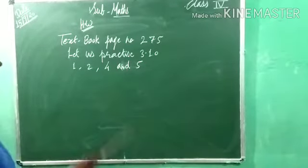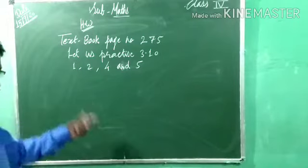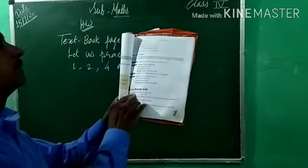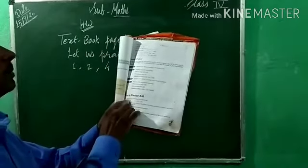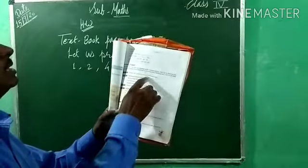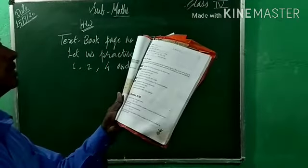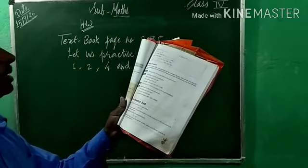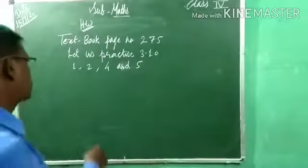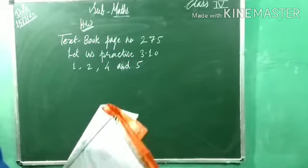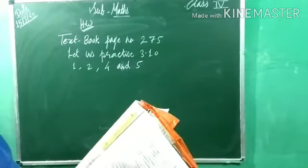Note down. Textbook page number 275, let us practice 3.10 — questions 1, 2, 4, and 5. Third and sixth examples I already explained. For question 1: estimate the product by rounding to the nearest tens — 128 into 282. For question 4: estimate the product by rounding to the nearest hundred — 424 into 270. Try to solve these four examples. In the next period we will study exercises, multiple choice questions, and true/false points.